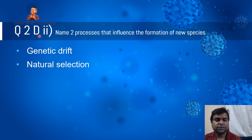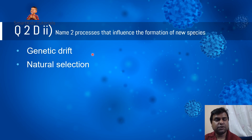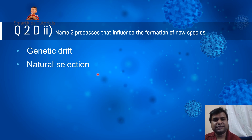Question 2D2: name two processes that influence the formation of new species. There are a number of them, but two commonly mentioned ones are genetic drift and natural selection.